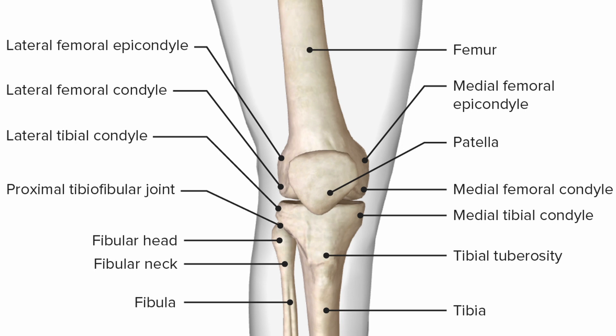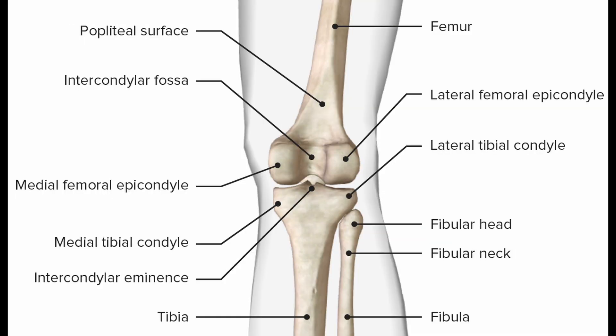Scanning technique. Knowledge of surface anatomy and bony landmarks is very useful in any part of the body. Correct transducer position concerning the underlying structure is key to achieving a good diagnostic image. Ultrasound examination of the knee will follow a sequence: anterior, medial, lateral, and posterior.